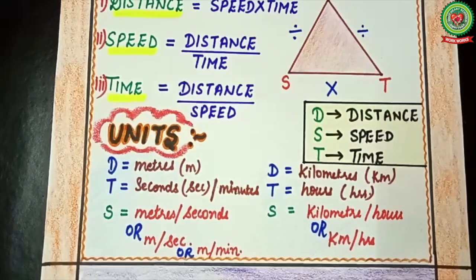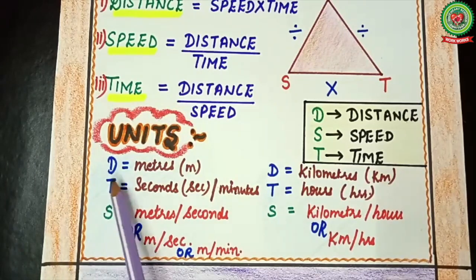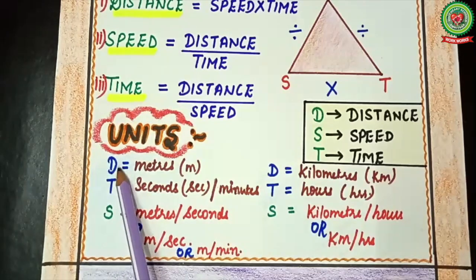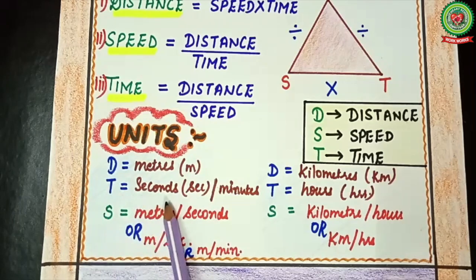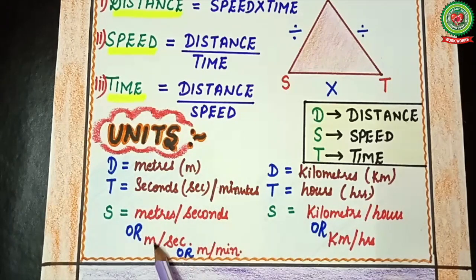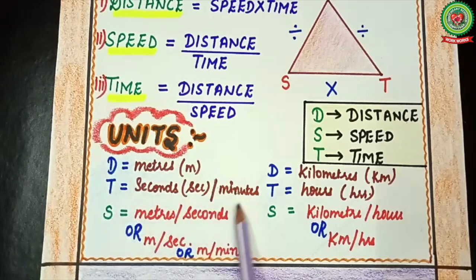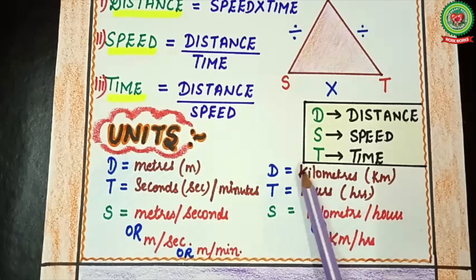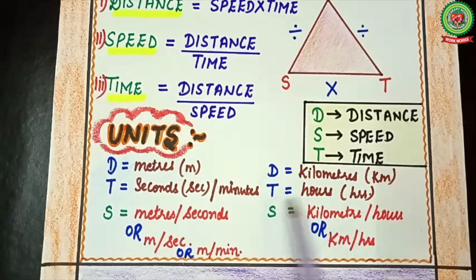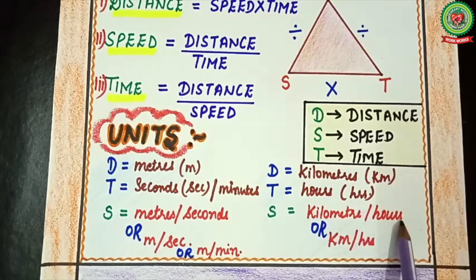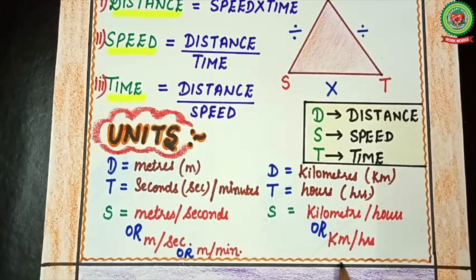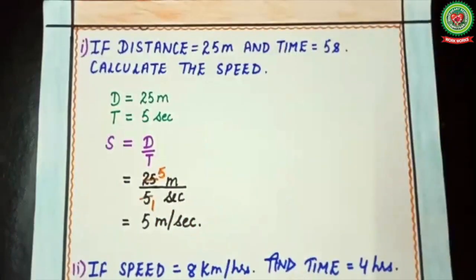Now we will talk about units of speed, distance and time. If distance is in meters and time is in seconds, then the unit for speed will be meter per second. If distance is in meters and time is in minutes, the unit will be meter per minute. If distance is in kilometers and time is in hours, the speed unit will be kilometer per hour, or km/h.